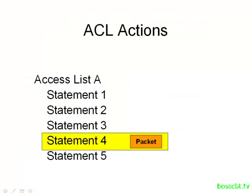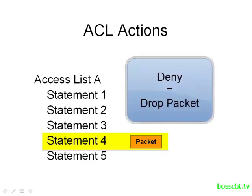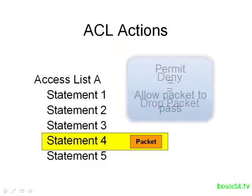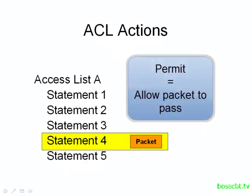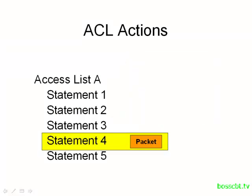After a match is made to a particular statement in an Access List, an action can be taken. There are two types of actions an Access List can take. The first is to deny traffic — to actually drop the packet. The second action is to permit, in other words, allow the packet to pass. So: permit it or deny it if you match a particular statement.